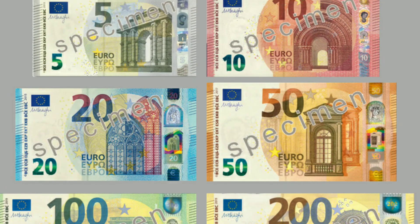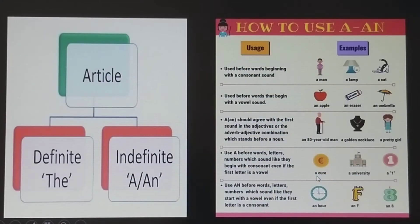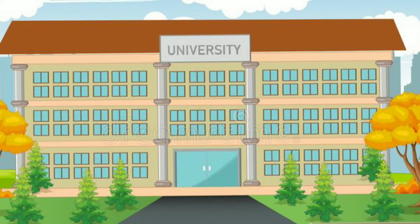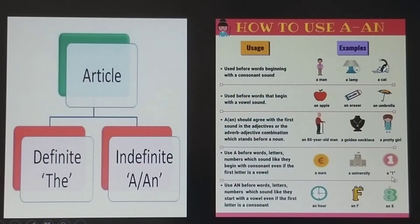For example, 'euro' — even though it starts with E, it sounds like a consonant, so: a euro. Similarly, 'university' — it sounds like 'you', a consonant sound — so: a university. The word 'one' sounds like it starts with W, a consonant sound.